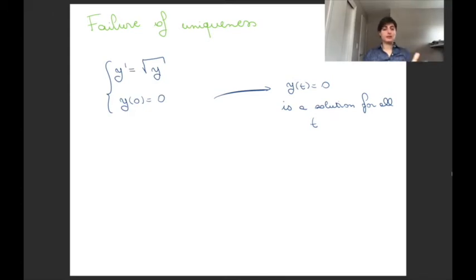So let's look at this simple example. We are setting y' equals to the square root of y, and we start at y(0) equals 0.